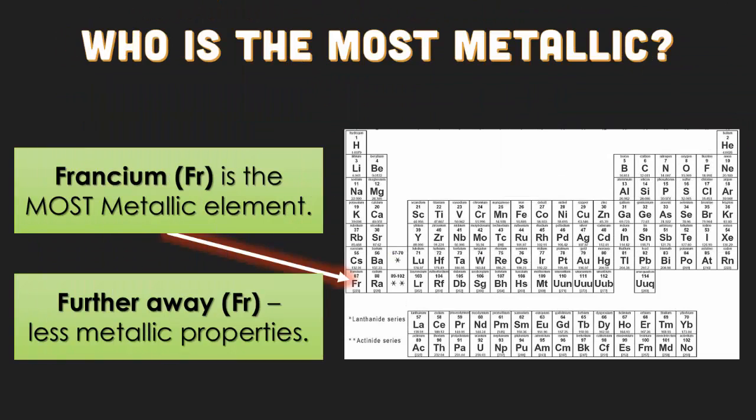Who is the most metallic element on the periodic table? That would be francium, because it is the most metallic element. The further away from francium you are, the less metallic properties you have. So if you were to look at oxygen, which is on the other side of the periodic table, it's not going to be very metallic because it's really far away from francium.